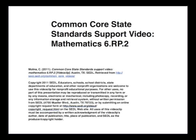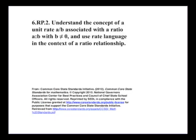Common Core State Standards Support Video, this is Grade 6, the math standard is 6RP.2. This standard reads: understand the concept of a unit rate A over B associated with the ratio A to B with B not equal to 0, and use rate language in the context of a ratio relationship.